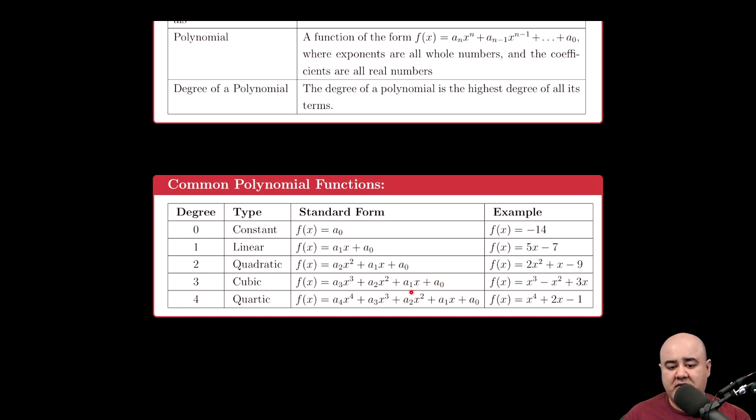That's the standard form with different letters, but here we're just replacing a, b, c, and d with a sub 3, a sub 2, a sub 1, a sub 0. Here's an example of a cubic polynomial that I'm sure you've seen in the past.